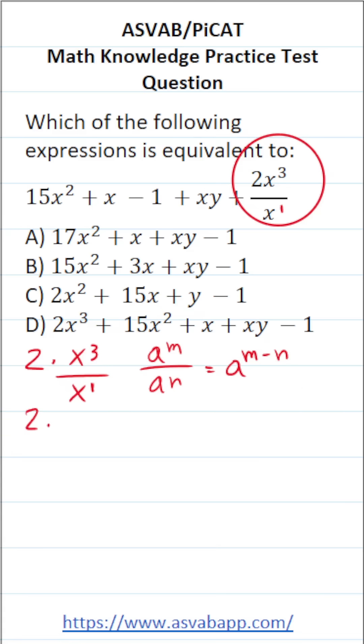And that's what we're going to do here. Again, this is going to become x to the third minus 1, which is 2x squared. So in other words, this whole thing here is 2x squared.